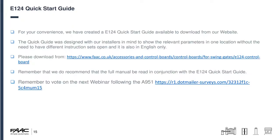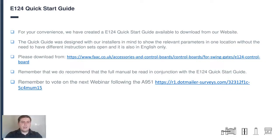The E124 quick start guide has been created to give you a step-by-step rough installation sequence. It's all in English with no having to go through different pages — it's a total of 12 pages, quite nicely short, and just downloadable from the E124 website. We do also recommend you read the actual full manual in conjunction with it. If you click the link in the presentation when you receive it, please vote on what you would like us to look at next. That brings me to the end of the main presentation — now we'll see what questions have come up.